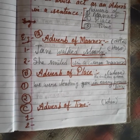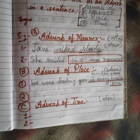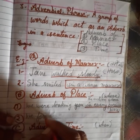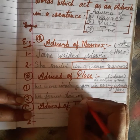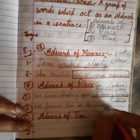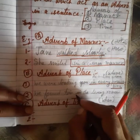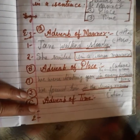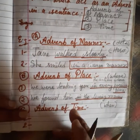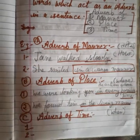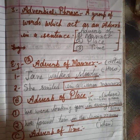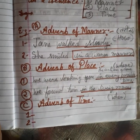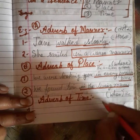एक और adverb of place example: 'We found him in the living room.' Where we found him? हमने उन्हें living room में पाया। तो 'in the living room' यहाँ पर adverbial phrase में adverb of place show करेगा, क्योंकि 'where' करके answer मिल रहा है।